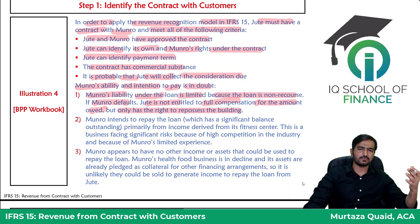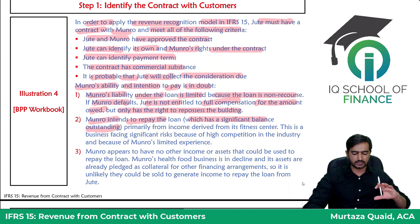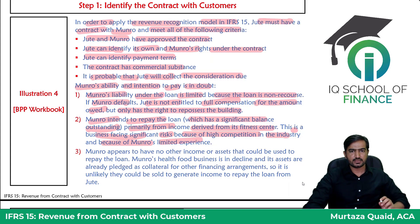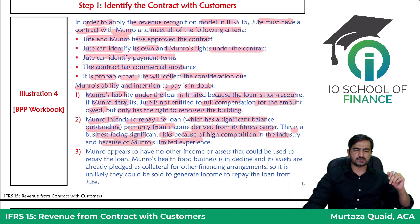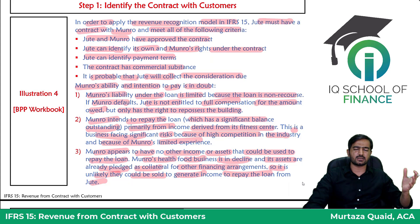Jute can repossess the building if Munro defaults, but can recover only up to the building's value — the outstanding balance is approximately 2.85 million dollars, which is significant. Munro intends to repay the loan from income generated by the fitness center, but this business faces significant risk due to high competition and Munro's limited experience in the fitness industry. Furthermore, Munro appears to have no other income or assets available to repay the loan — Munro's health food business is in decline and its assets are already pledged as collateral for other financing arrangements, making it unlikely they could be sold to generate funds.